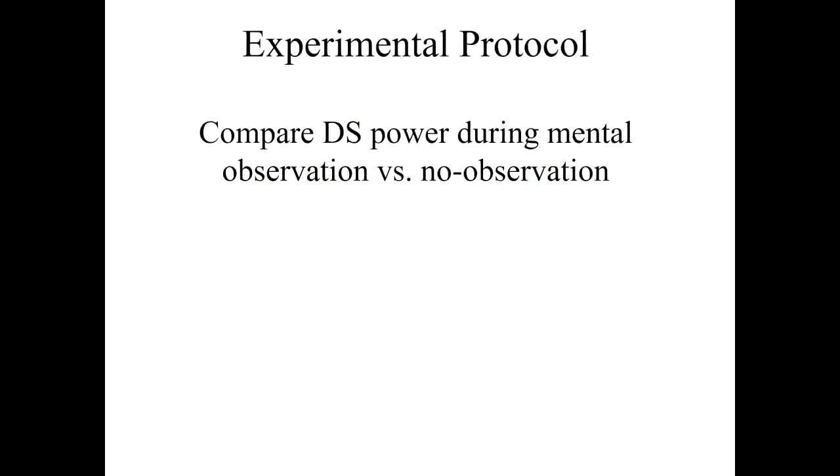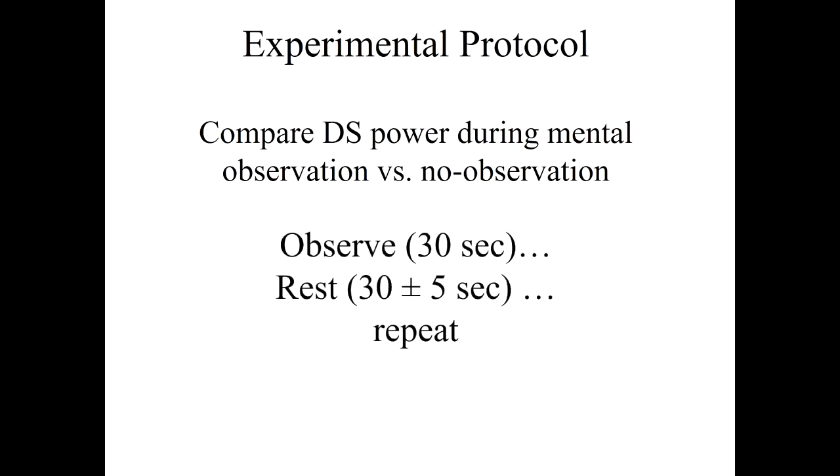The protocol is very simple as well. We compare the double-slit power during mental observation versus no observation. They get a voice message which says, now concentrate, and then now relax, and this alternates. We do the observation periods for 30 seconds, and the rest periods are 30 seconds plus or minus a random 5 seconds for reasons I'll mention later. This is repeated in a typical session 40 times. So the whole session lasts 20 minutes. And the measure that we're interested in is a differential measure. We're asking, what is the double-slit power while observing versus while resting? So we generally present it in terms of a z-score or an effect size.